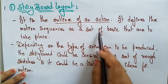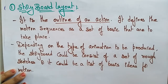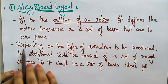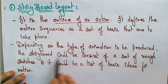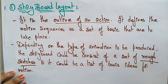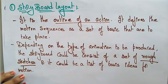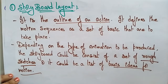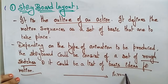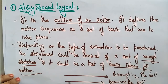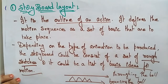The storyboard defines the motion sequence as a set of basic events that take place. Depending on the type of animation — cell animation, kinematics, computer animation, or morphing — the storyboard could consist of a set of rough sketches showing how the ball starts bouncing step by step, or it could be a list of basic ideas about the motion, such as whether you are throwing the ball or bouncing the ball.